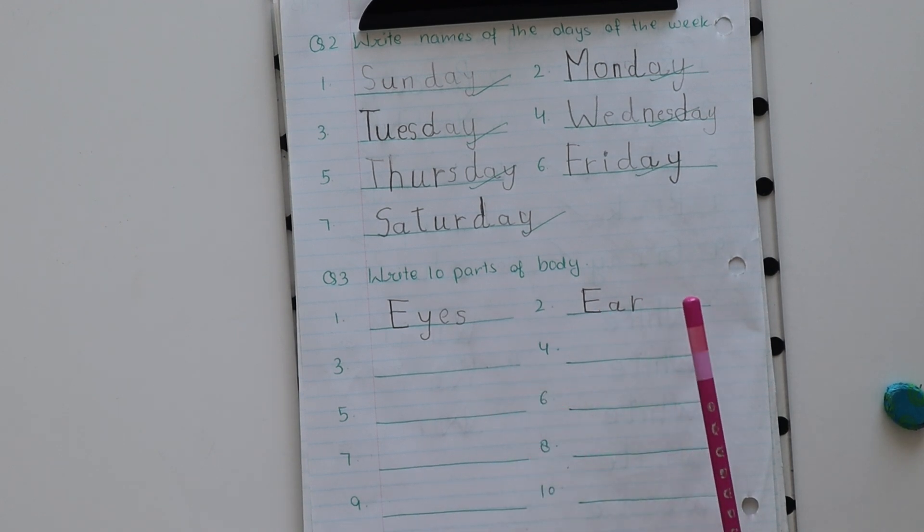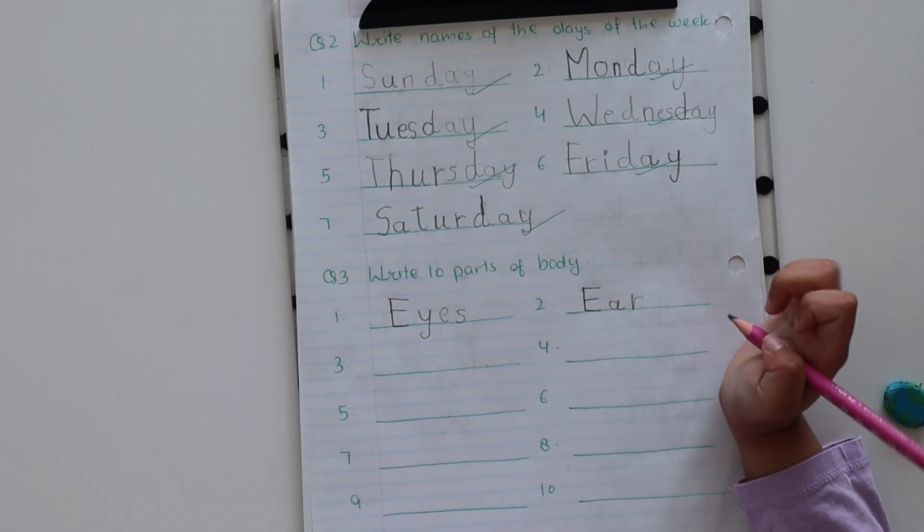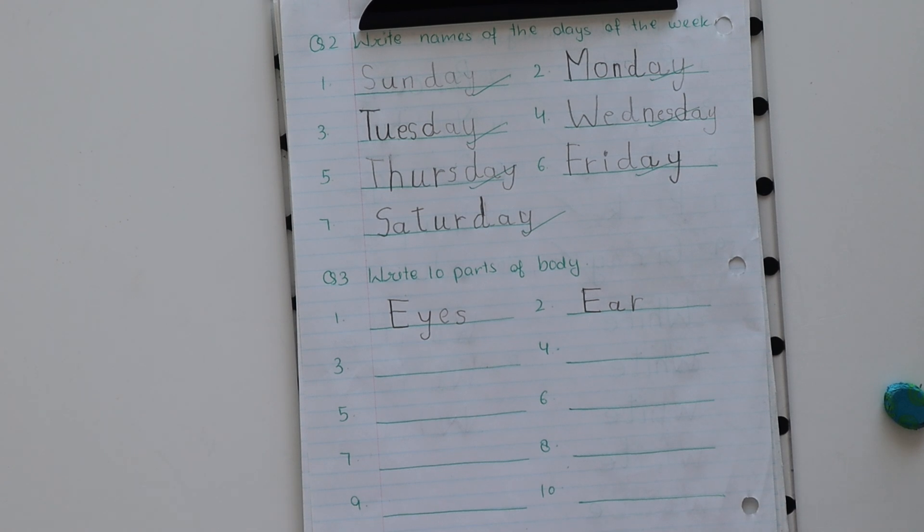Write ten parts of body. Eyes. We have two eyes.